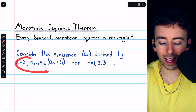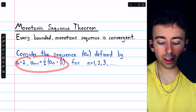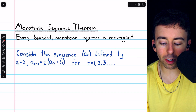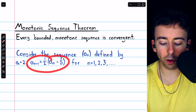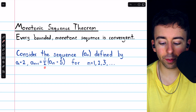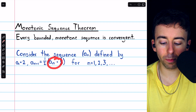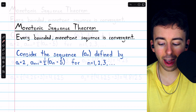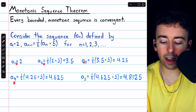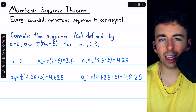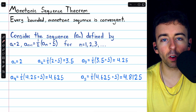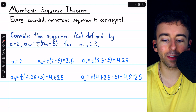It's defined like this: the first term is equal to 2, and every subsequent term is one half times the previous term plus 5. We could calculate the first handful of terms of this sequence just to get an idea of how it behaves and make sure we understand the definition.